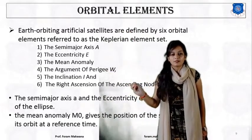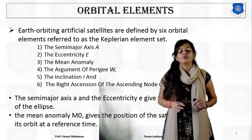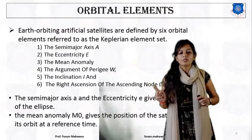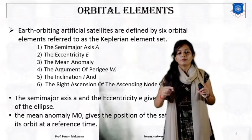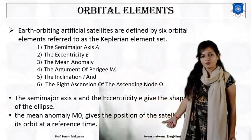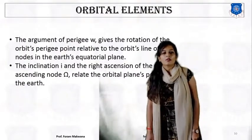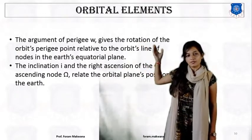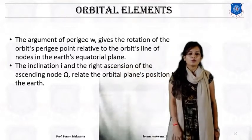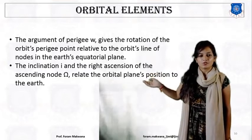What is the use of orbital elements? The semi-major axis and eccentricity give the shape of the orbit: if eccentricity equals 0, the orbit is circular; if it lies between 0 and 1, the orbit is elliptical. The mean anomaly gives the position of the satellite in its orbit at a reference time. The argument of perigee gives the rotation of the orbit's perigee point relative to the orbit's line of nodes in the earth's equatorial plane. The inclination and right ascension of ascending node relate the orbital plane's position with respect to the earth.